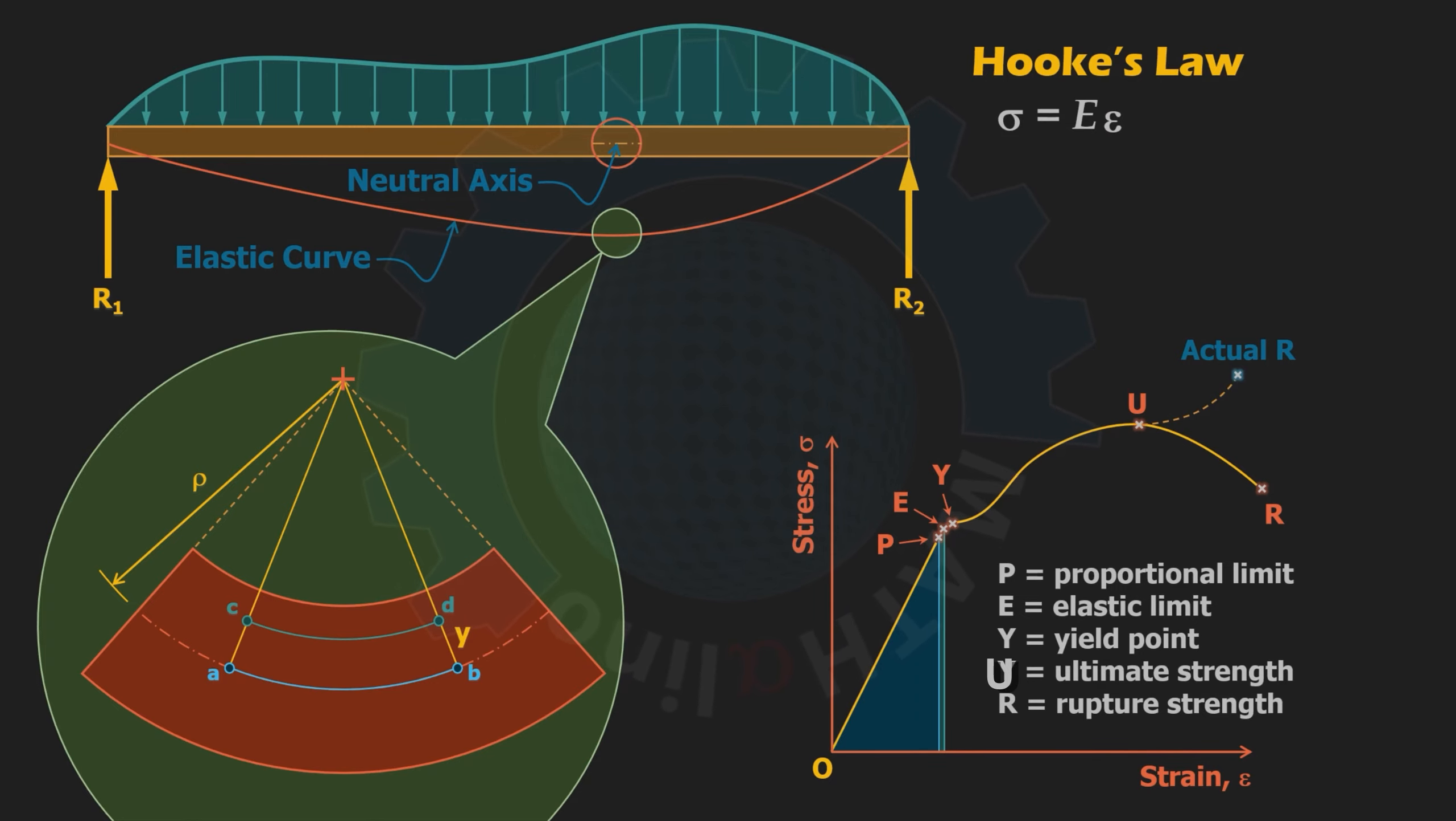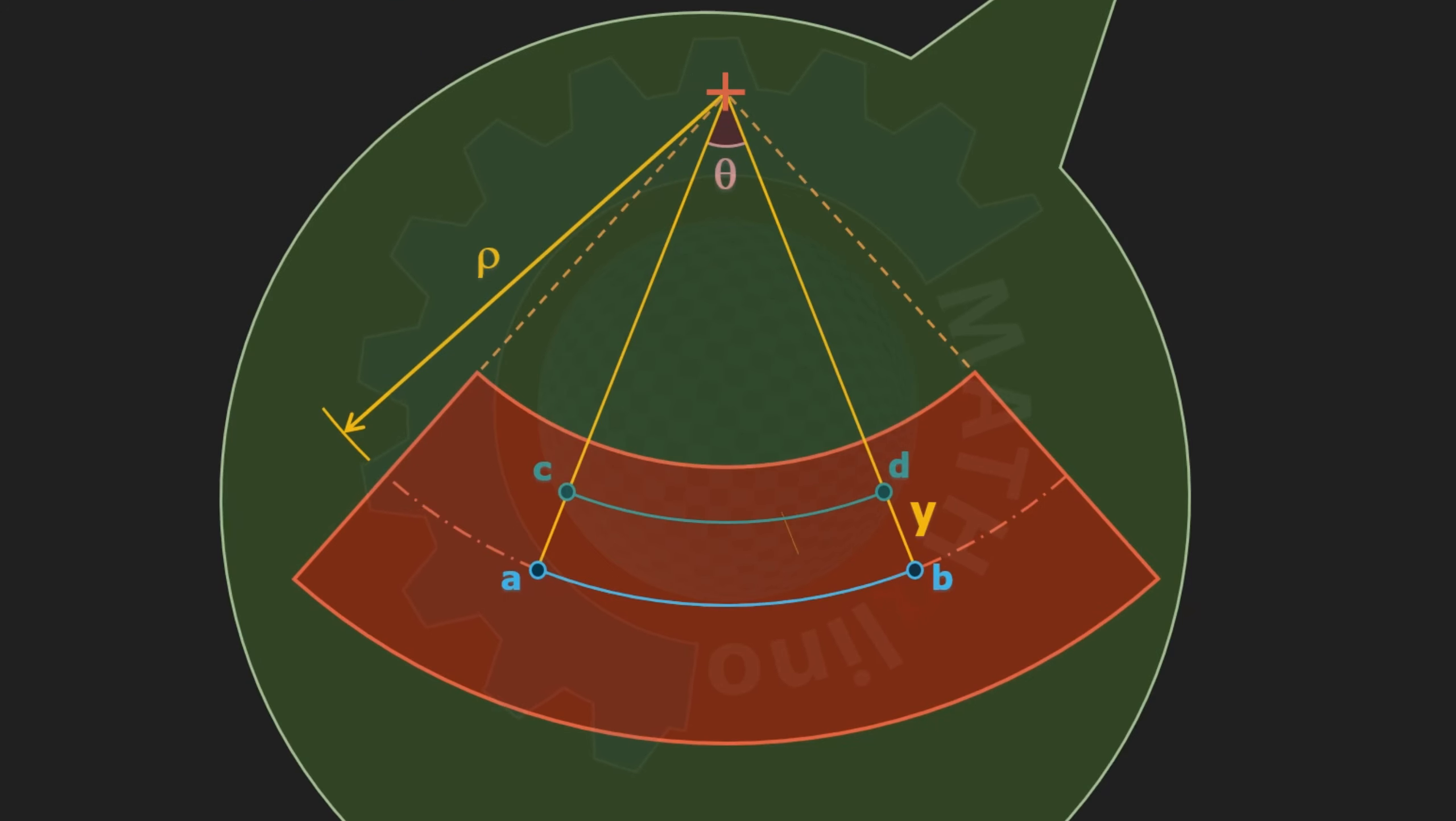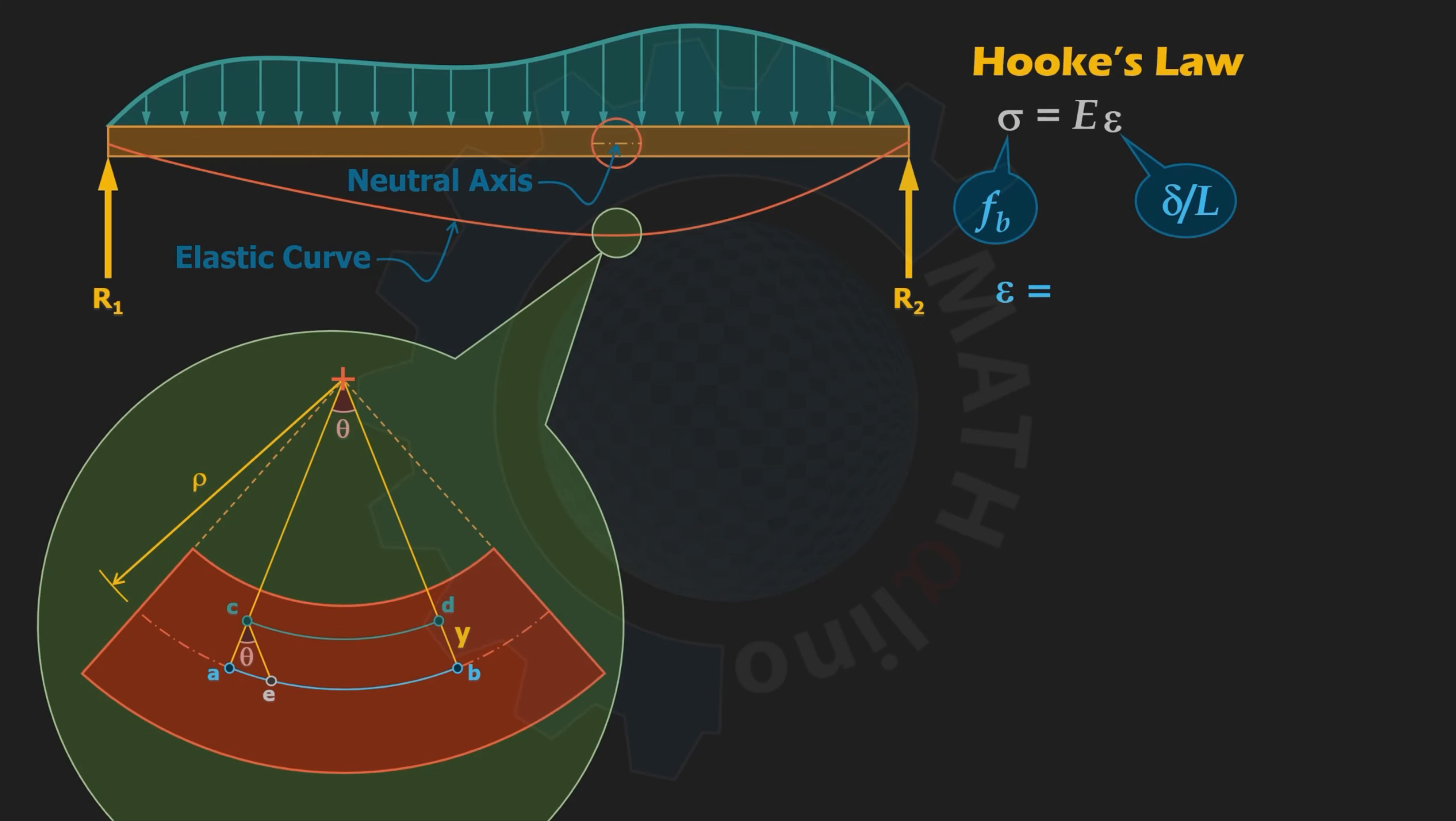In bending, we do not use sigma as symbol for stress. Instead, we prefer f subscript b. Recall that the strain epsilon is the ratio of deformation to length, or that is equal to delta over L. Note that initially the lengths cd and ab are equal, but due to compression, cd has shortened by an amount ae. Therefore, strain is equal to ae over ab.